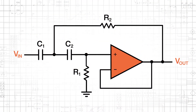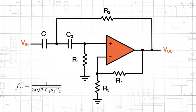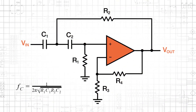If we swap the resistor and capacitor in an RC low-pass filter, we convert the circuit into a CR high-pass filter. We can then cascade two CR high-pass filters to create a second-order CR-CR high-pass filter. Incorporating this configuration into the Sallen-Key topology gives us the Sallen-Key unity gain high-pass filter. The expression for cutoff frequency is the same as the Sallen-Key low-pass filter, and we use the same technique to incorporate gain.